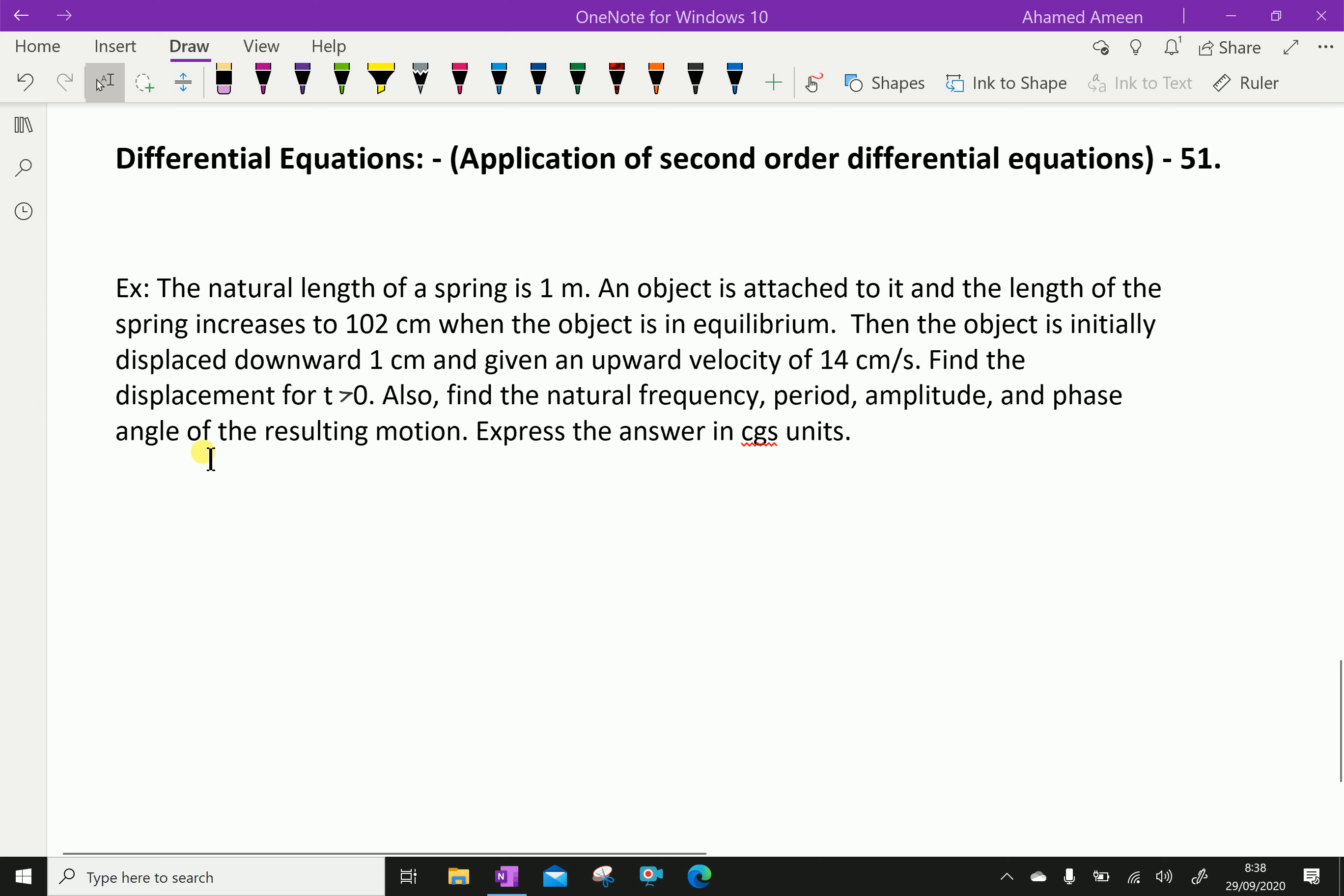The object is initially displaced downward 1 centimeter and given an upward velocity of 14 centimeter per second. Find the displacement for t greater than 0. Also find the natural frequency, period, amplitude, and phase angle of the resulting motion. Express the answer in CGS units.